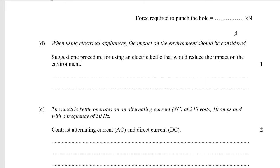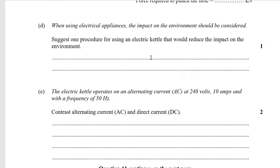When using electrical appliances, the environmental impact should be considered — suggest one procedure to reduce the impact. You could say use modular components so that when it reaches the end of its life the parts can be taken apart and reused in new appliances. Another answer: having a removable cord means that if the cord gets damaged you don't have to replace the whole kettle — I actually like that answer a lot better.